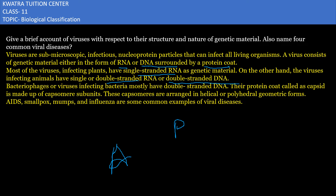Bacteriophage viruses, which infect bacteria, have double-stranded DNA as their genetic material. This protein coat is called a capsid, which surrounds the RNA or DNA present in viruses.